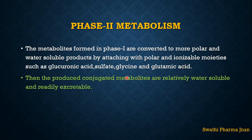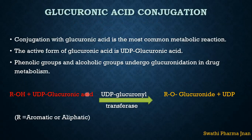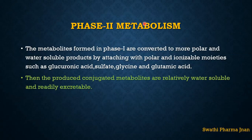The produced conjugated metabolites are relatively water-soluble and readily excretable from the human biological system. That is the mechanism of Phase 2 metabolism. Under Phase 2 metabolism reactions, there are four types: glucuronic acid conjugation, sulfate conjugation, glycine conjugation, glutamic acid conjugation, and lastly methylation and acetylation.